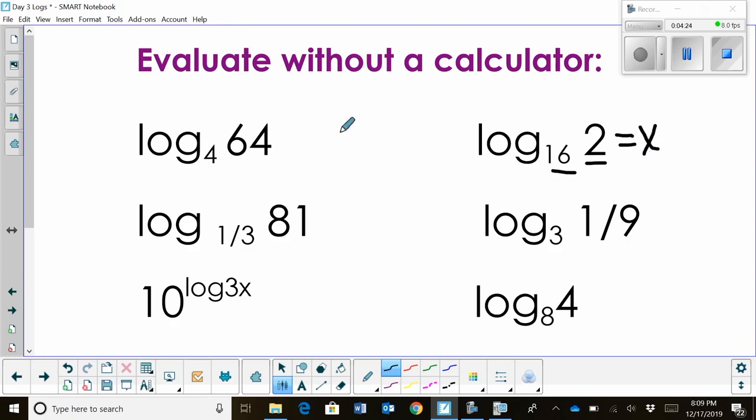I can rewrite this as 16 to the x power is equal to 2. Well, wow, I'm getting smaller here. So how do I take 16 to a power? What I'm going to do is I'm going to rewrite 16 so it has the same base. So 16 can be written as a base 2 if we take 2 and raise it to the 4th power. So 16 can be rewritten as 2 to the 4th all to the x. So it's 2 to the 4x is equal to 2.